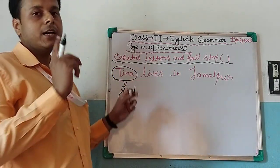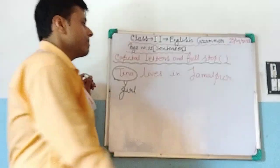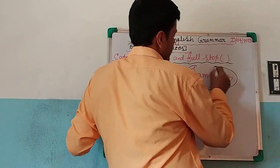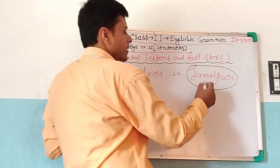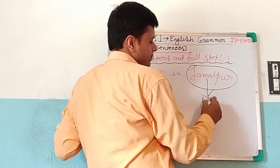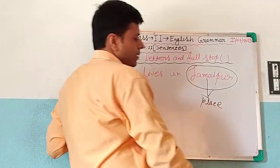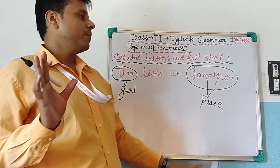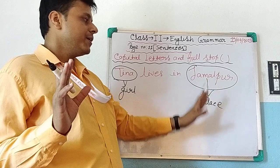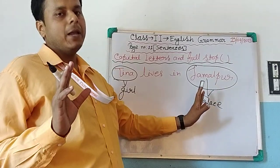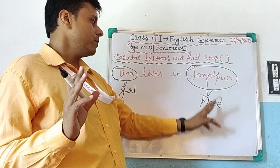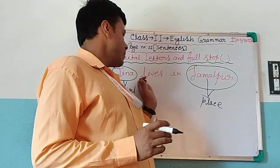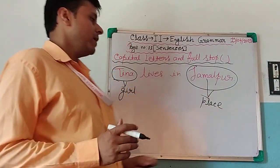When I say Tina, Tina refers to a particular girl. And Jamalpur — you all know that our school is situated in Jamalpur. Jamalpur is the name of a place. If I say village or town, that refers to any village or any town. But if I say Jamalpur, it's the name of a particular place. Jamalpur is a special name — a special name for a person, a special name for a place.